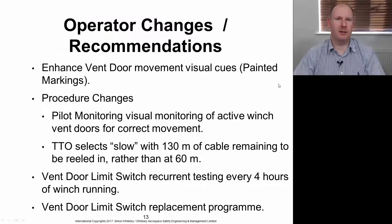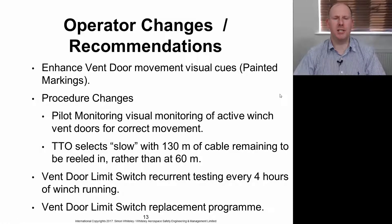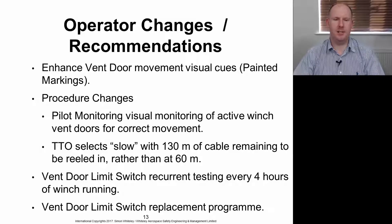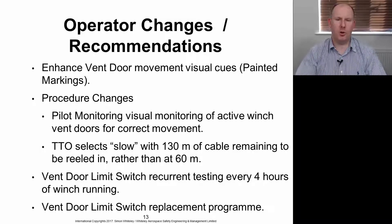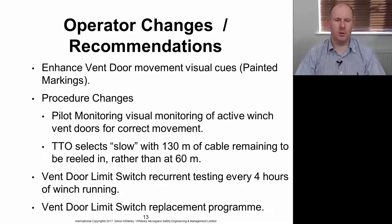These are the operator changes and recommendations that the operator put forward. They wanted to enhance the vent door movement visual cues, so they painted some extra markings on there to make it easier to see. They made some changes to procedures so it requires the pilot monitoring to visually monitor the active winch vent doors for correct movement—that's effectively doubling up on what the target tow officer does. Another procedure change, but this time for the TTO, is to select the slow setting on the control panel with more than double the length of cable remaining as previously, giving them more time to keep an eye on what the cable is doing and how the target is behaving. Vent door limit switch recurrent testing every four hours of winch running reduces the dormancy of issues, and then the vent door limit switch replacement program.